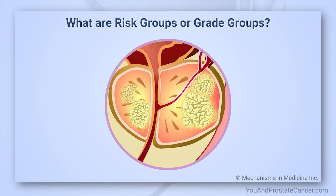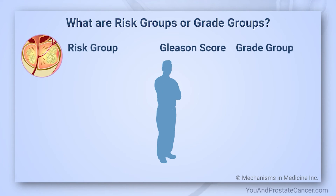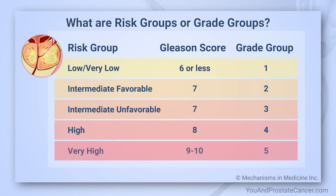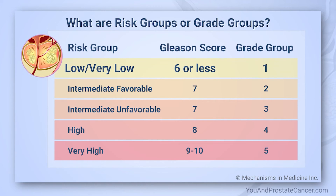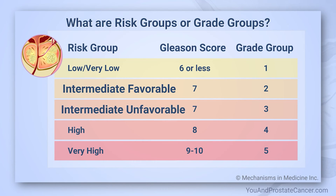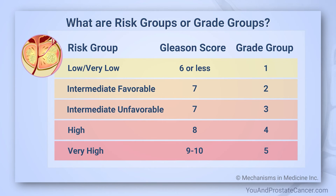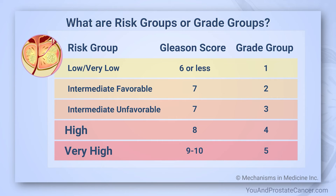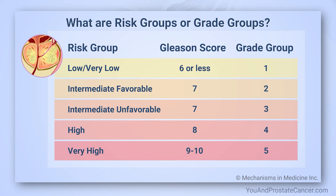In 2014, they introduced what they call grade groupings, also called a risk group. Low and very low is a Gleason score equal to or less than six. Intermediate is a Gleason score of seven. And high and very high is a Gleason score of eight through ten. This helps the patient understand the nature of the tumor, how soon it needs to be treated, and how aggressively it needs to be treated.